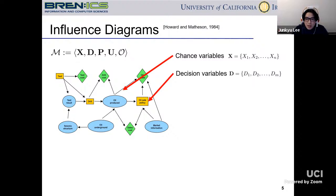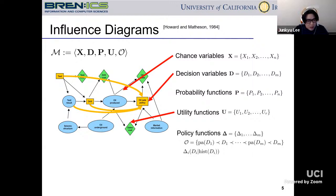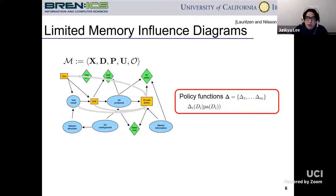In this kind of diagram, the chance variables are drawn as circles and the decision variables are drawn as squares. Probability functions are conditional probability functions, likewise in the Bayesian network, and utility functions are defined over the chance variables and decision variables. Policy functions are associated with each individual decision variable. Under the perfect recall assumption, where we assume that an agent will never forget the past, the policy function is defined as a conditional function from history to the decision. The standard task in an influence diagram is computing the maximum expected utility (MEU), and possibly finding the set of optimal policy functions that provide the MEU.